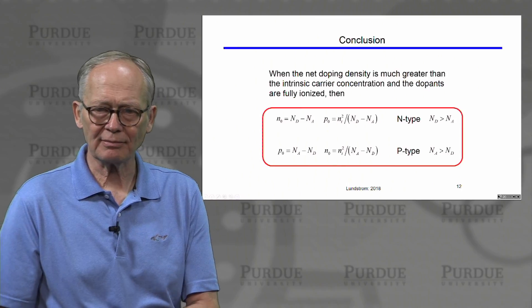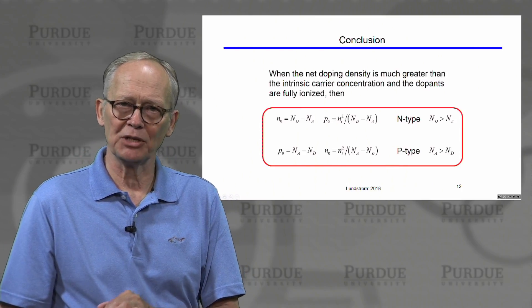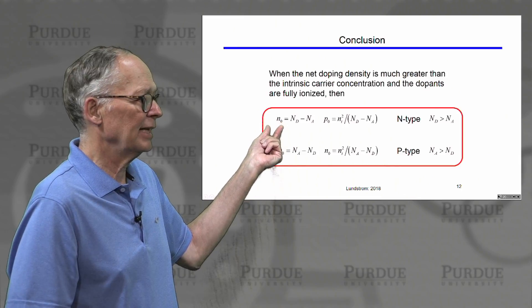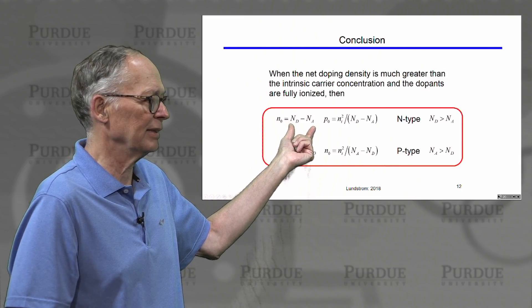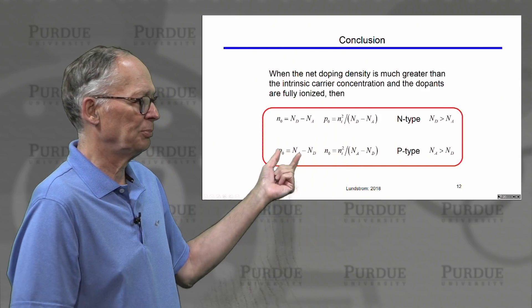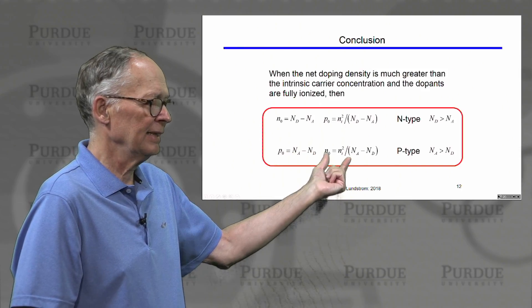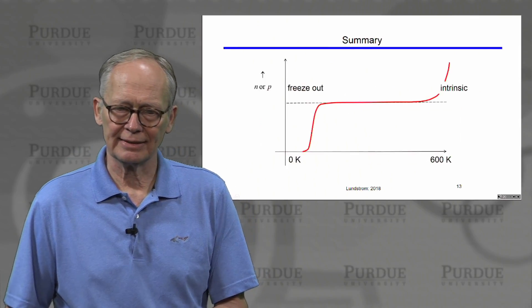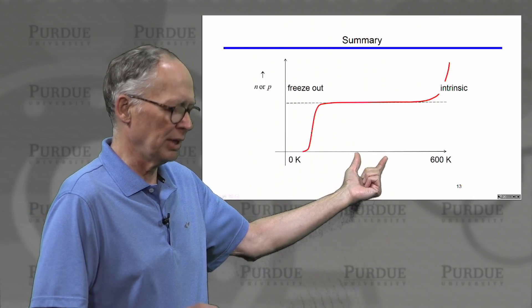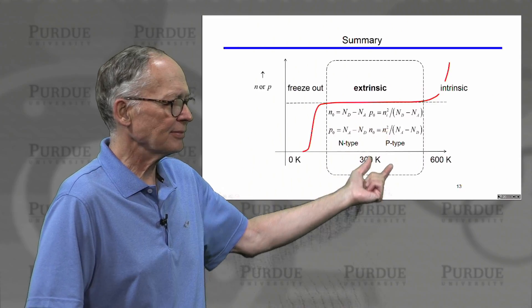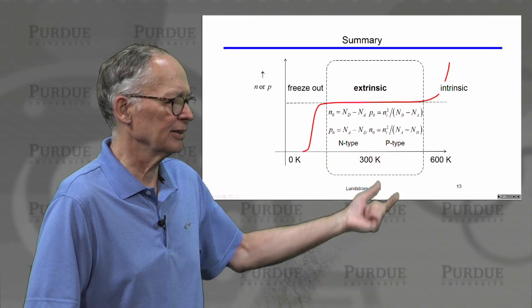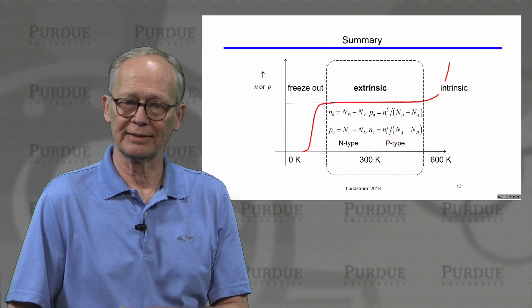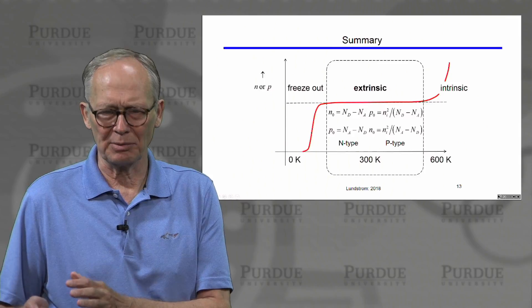The conclusion is that when the net doping density is much greater than the intrinsic carrier concentration and the dopants are fully ionized, the majority carrier concentration equals the net doping. For an N-type sample, the electron concentration equals the net N-type doping; for a P-type sample, the hole density equals the net P-type doping, and we also get the minority carrier concentration in each case. This is the extrinsic region — moderate temperatures, fully ionized dopants overwhelming the intrinsic carriers — and it is the region we will stay in for most of the remainder of the course.